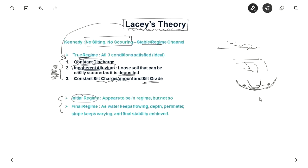Here also silting or scoring does not take place but the width keeps on varying. So it appears to be in regime but the theory of Kennedy cannot be applied here. So that is what Lacey says. Lacey's theory can be applied only to true regime or to final regime. Final regime is when as water keeps flowing, this width keeps on varying and finally some stability is achieved where the depth, perimeter and slope is constant. Once this is achieved, it is in final regime. So Lacey's theory can be applied only for final regime and not for initial regime. Kennedy did not take into account this factor.